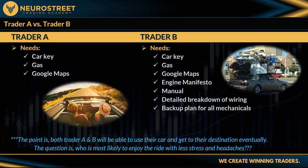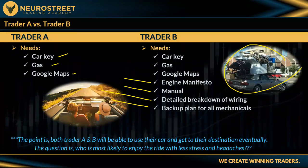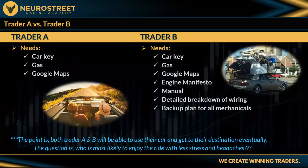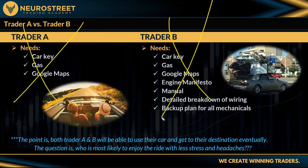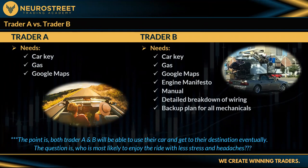There are two types of traders — Trader A and Trader B. Trader A going on a road trip needs car keys, gas, and navigation — that's it. Trader B needs all that plus the manual, an engine manifesto, detailed wiring breakdown, and backup plans for all the mechanicals. A and B will both eventually get where they're going, but who's more likely to enjoy the ride? In trading, neither extreme gets you there — you need to find the sweet spot in between.